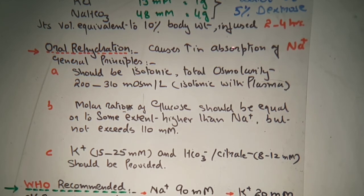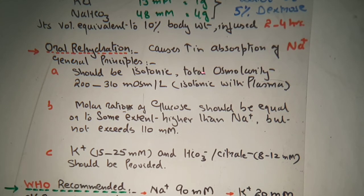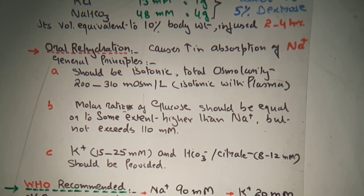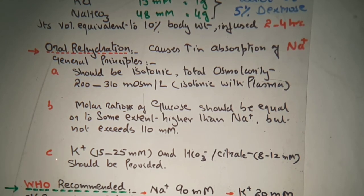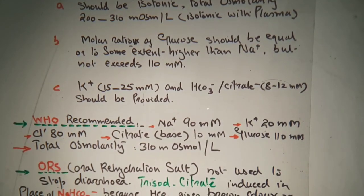Oral rehydration causes an increase in the absorption of sodium. General principles: the solution should be isotonic — having the same concentration as that of plasma — with total osmolarity of 200 to 310 millimoles per liter. The molar ratio of glucose should be equal to or slightly higher than sodium, but not exceed 110 millimoles. Potassium should be around 25 millimoles and bicarbonate or citrate 8 to 12 millimoles should be provided.